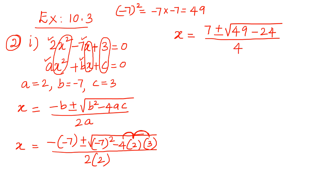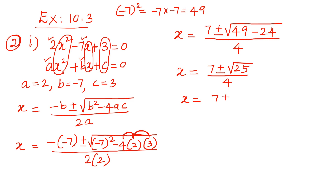Further simplification: x = (7 ± √(49 − 24)) / 4 = (7 ± √25) / 4. We know the square root of 25 is 5 because 5 × 5 = 25. So x = (7 ± 5) / 4.